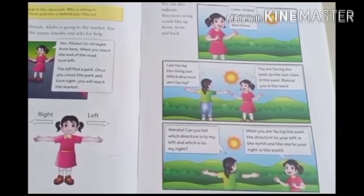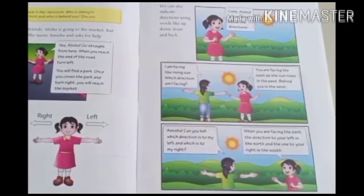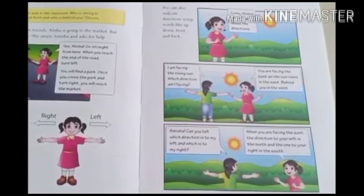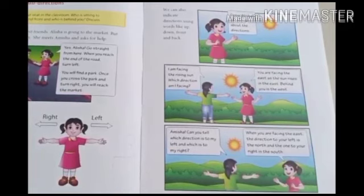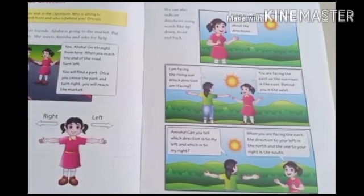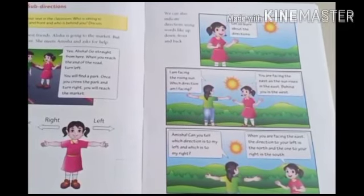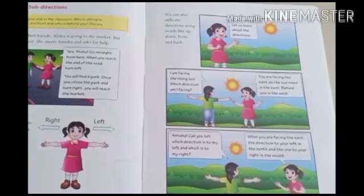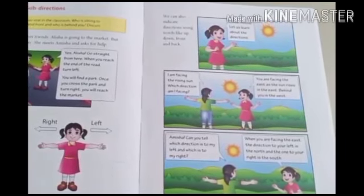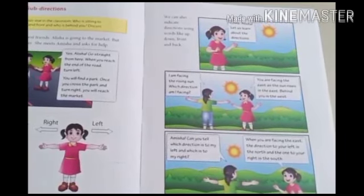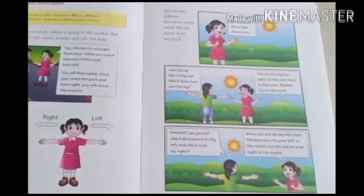Yaad hai — in the video shared on the first day, the boy was standing facing the sun. His face was towards the sun, so behind was west, to the right was south, and to the left was north. This is all about the main directions.